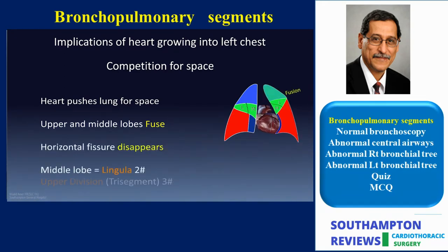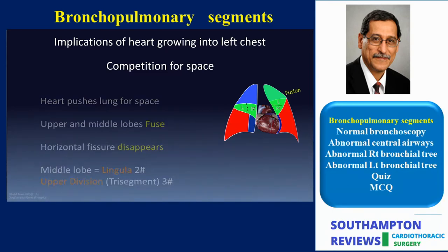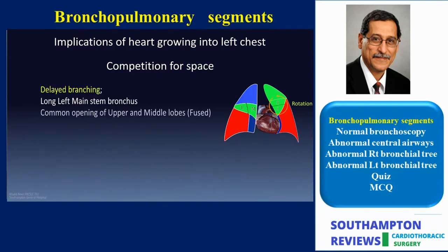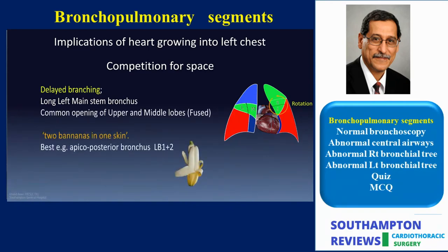The fissure between them disappears, but the total number of five segments is preserved. The middle lobe is now known as the lingula and has two segments, and the upper lobe is now known as the upper division or trisegment and has three segments. The heart displaces the middle lobe upward, rotating the medial and lateral segments into a superior and inferior segmental arrangement of the lingula. We will also see that the tight space forces delayed branching of the bronchi, with the upper division bifurcating into two bronchi instead of three — one of the divisions exhibiting the phenomenon of two bananas in one skin: the apicoposterior bronchus.